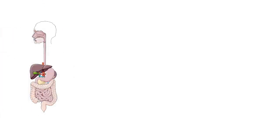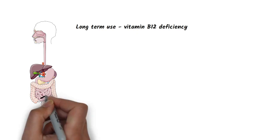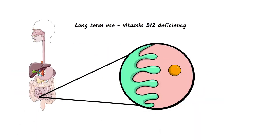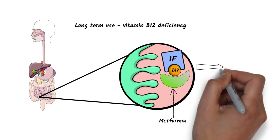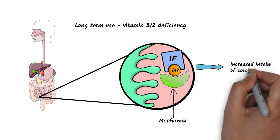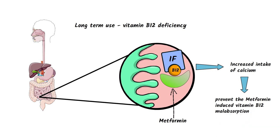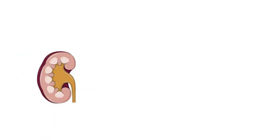Long-term use of metformin can cause vitamin B12 deficiency. Metformin interferes with the calcium-dependent absorption of the vitamin B12 intrinsic factor complex in the terminal ileum, and vitamin B12 deficiency can occur after many years of metformin use. Periodic screening for vitamin B12 deficiency should be considered, especially in patients with peripheral neuropathy or macrocytic anemia. Increased intake of calcium may prevent metformin-induced vitamin B12 malabsorption.